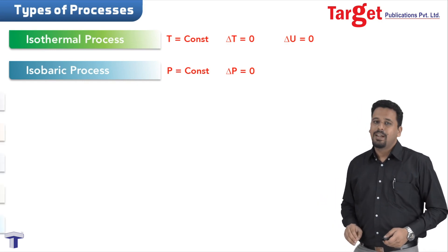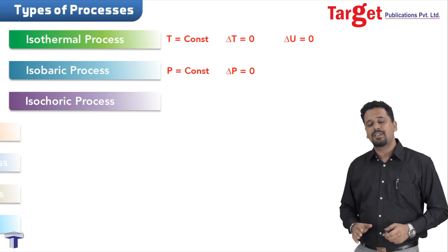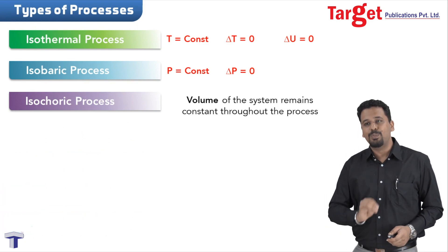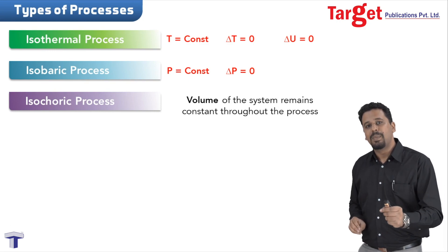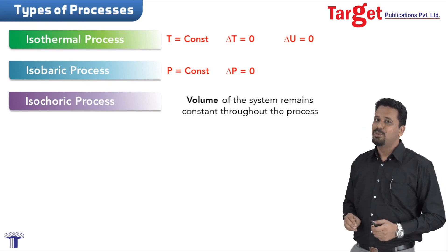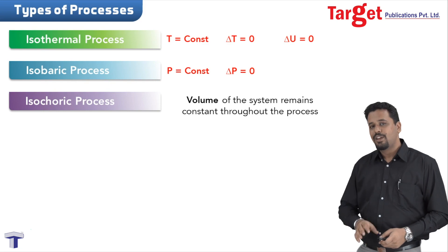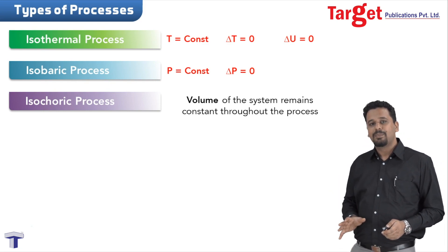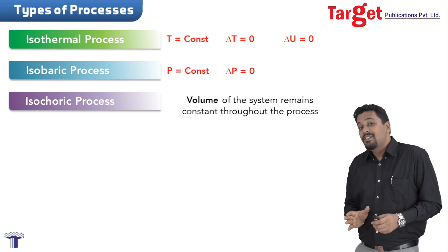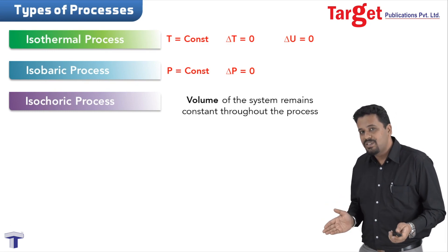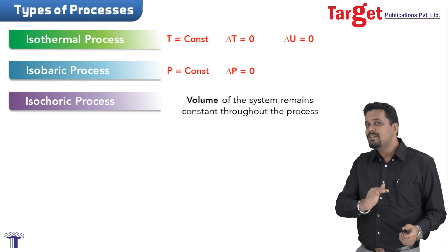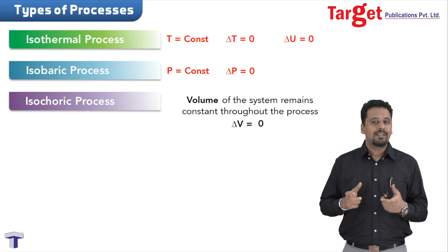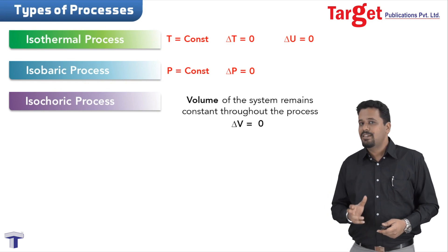The next process is isochoric process. This is a process in which the volume of the system remains constant throughout. Since volume does not change, we can say that delta V is zero.